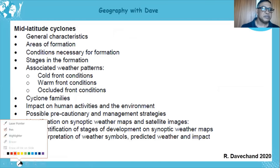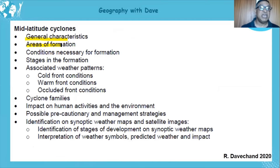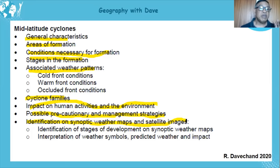We look at the general characteristics, areas of formation, conditions necessary for formation, stages of formation, associated weather with each — cold front, warm front, occluded front, conditions, cyclone families, impact on the environment, case study, cautionary measures and management strategies, and identification on a synoptic map and satellite images.